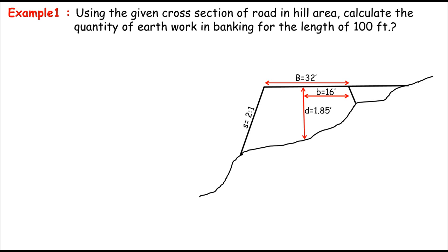Let's say if the side slope is 2 and 1. And also, let's assume if the cross slope is 10 and 1. That's just the slope of natural ground level, or you can say the slope of NGL. This data is just enough to determine the quantity of earthwork in banking for the length of 100 feet road.